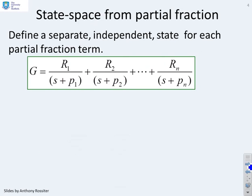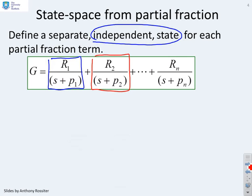So state space and partial fractions. The first thing we need to do is do the partial fraction expansion, and then we're going to define an independent state for each partial fraction term. In essence, what you're saying is I'm going to get a state space model for that term, and then a separate state space model for this term, and so on. But I'm going to put all these state space models into a single matrix for ease.